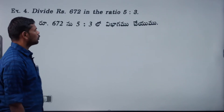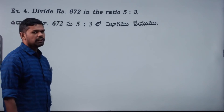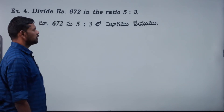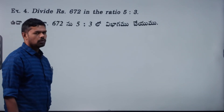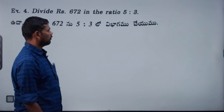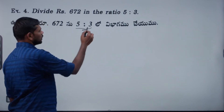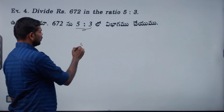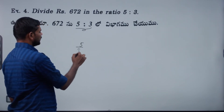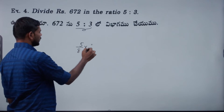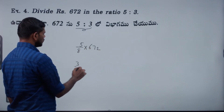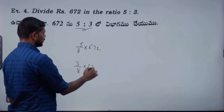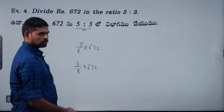Divide 672 rupees in the ratio of 5 is to 3. Total 5 plus 3 is 8 parts. First share: 5 by 8 into 672. Second share: 3 by 8 into 672.